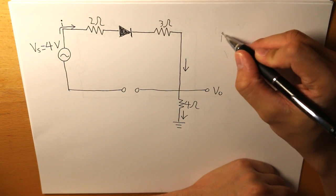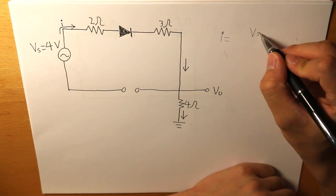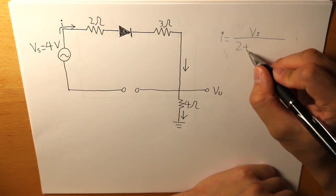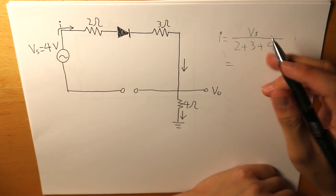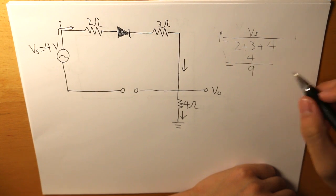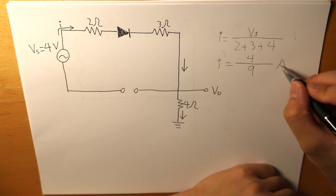So our current is equal to our voltage source divided by the resistance. And the voltage source is 4 divided by 9. Therefore, our current is 4 over 9 amps.